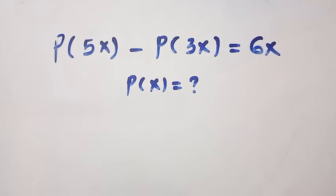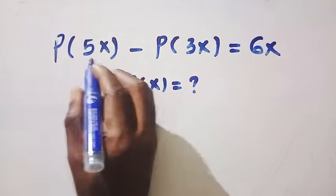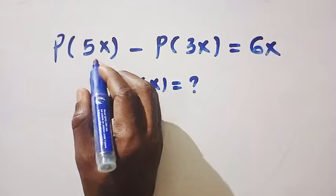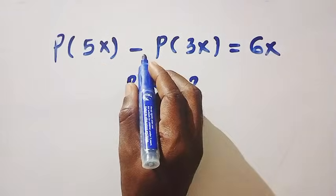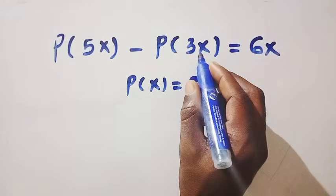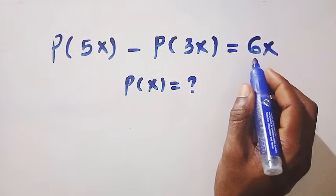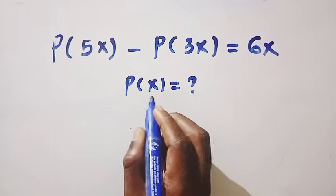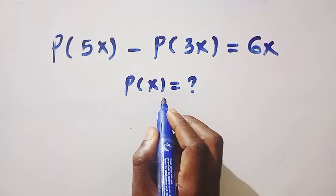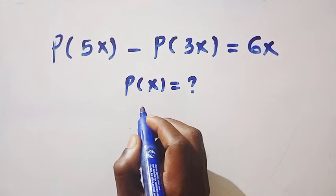Good day viewers, you are welcome. How to solve these interesting functional equations: given that P(5x) minus P(3x) equals 6x, I want to find P(x) in a general form.